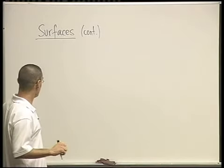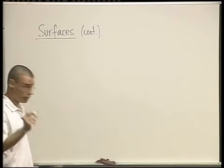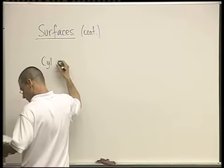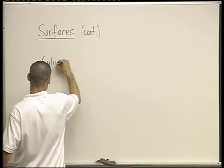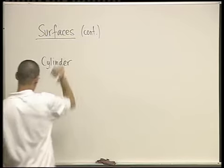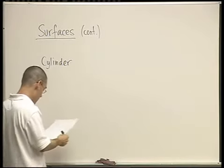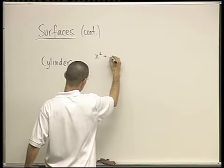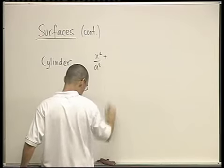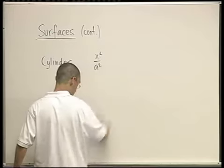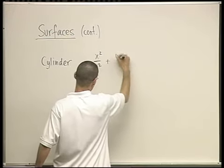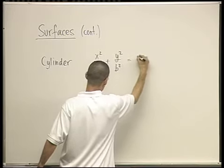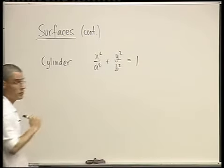So, the next surfaces that I want to talk about are called cylinders. Cylinder, is it one L or two Ls? Okay, cylinder. So, they're a bit different than the other surfaces we've been talking about. For example, x squared over a squared plus y squared over b squared equals 1. This is a cylinder.